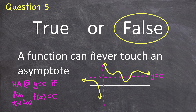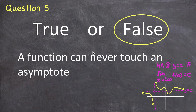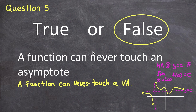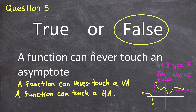There are two ways to correct this: we could say a function can never touch a vertical asymptote, or we could say a function can touch a horizontal asymptote.